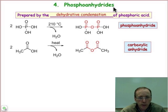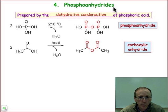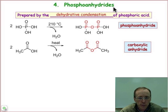Second, we looked at the phosphomonoesters. Throughout the semester we've seen examples of transforming hydroxyl groups through phosphorylation into phosphomonoesters. These are good leaving groups for substitution and elimination chemistry.